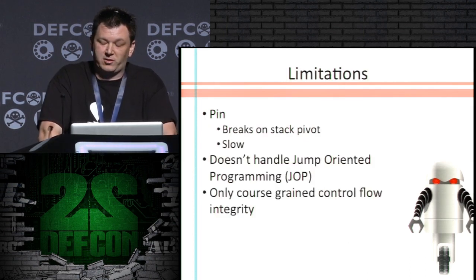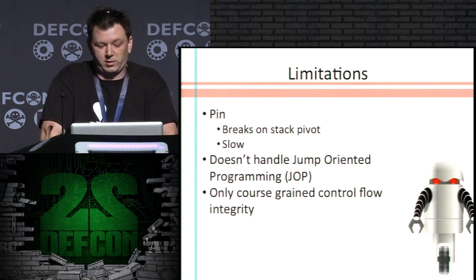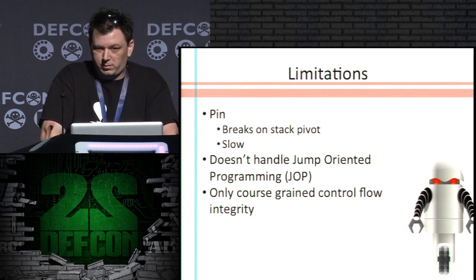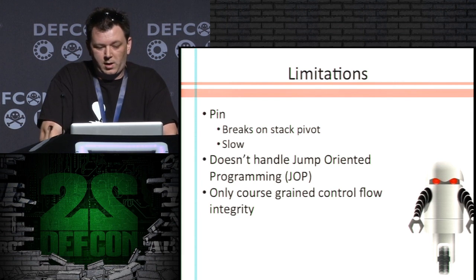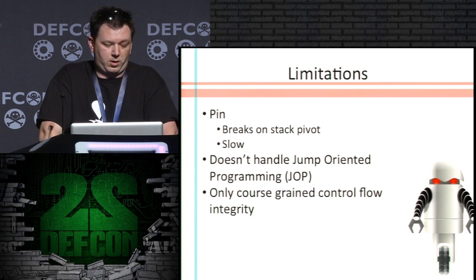Let's talk about the limitations. Obviously, breaking the stack pivot is a pretty big limitation. Since we're running this in PIN, it's also kind of slow. This is not ready for prime time. We don't handle jump oriented programming — JOP. I would need a sample to test that out first. And we only do coarse-grain control flow integrity, not fine-grain yet.